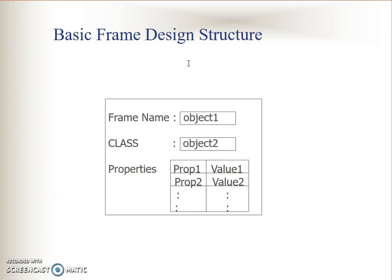Let's look at the basic frame design. This is the basic design whereby you have a frame name or the object name, and then this object belongs to a class, so you have class attributes, and then we have properties — property 1, property 2, and a list of properties as well as the values for each property. Frames can also hold multiple values, which I will show you later in this lecture.